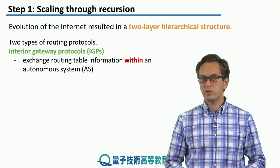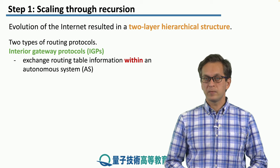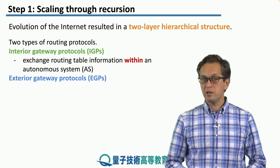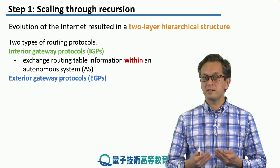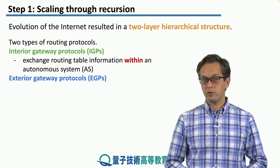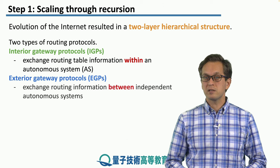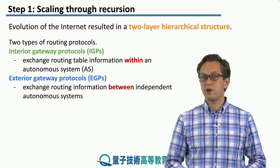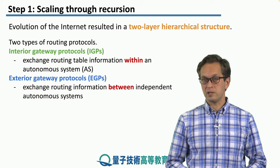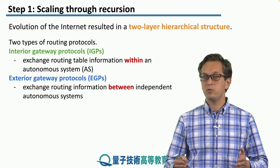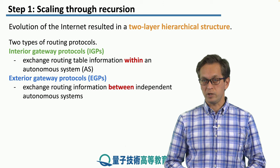For our purpose, it's really within a network. And as opposed to the interior one, there's the second type: the exterior gateway protocols, the EGPs. These exchange routing information between independent autonomous systems. So these are the protocols that tell us how to route information between quantum networks.